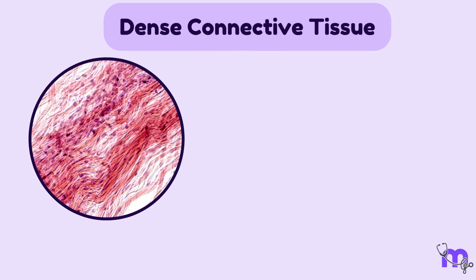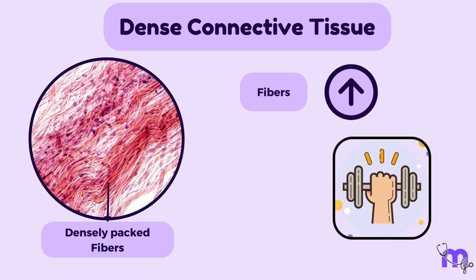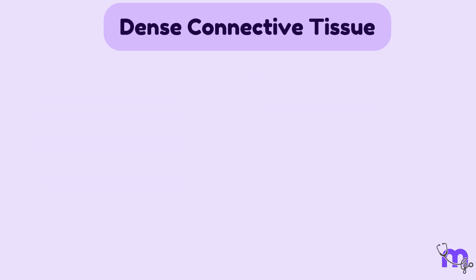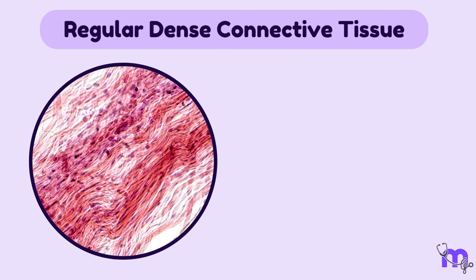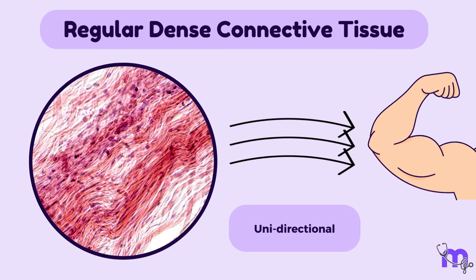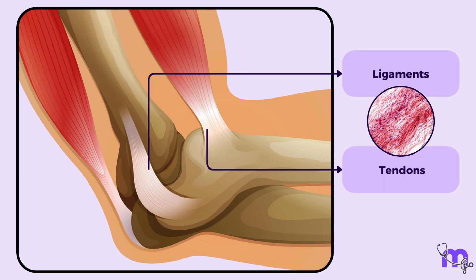The next type of connective tissue is dense connective tissue, which, as the name suggests, has a higher concentration of fibres compared to loose connective tissue. The fibres are densely packed together, providing greater strength and support. There are two types: regular and irregular. In regular dense connective tissue, the collagen fibres are arranged in a parallel fashion, giving the tissue strength in one direction. This type is found in tendons and ligaments, which connect muscles to bones and bones to each other.